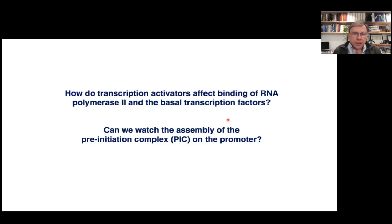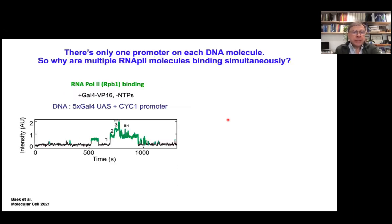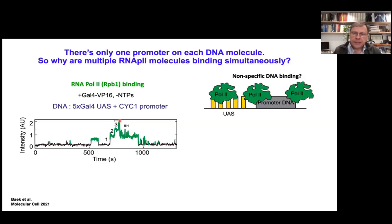In the second part of the talk, I'll describe work from Inwa, published in Molecular Cell last year. We came from the context of the initiation complex, asking about assembly of general transcription factors on the TATA box. One surprise: when we looked at individual traces, we would see binding of a single polymerase, but then sometimes a second — quite often a second — and even a third or fourth polymerase on the same DNA.